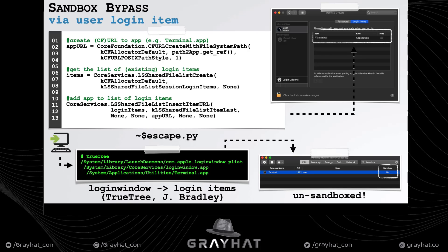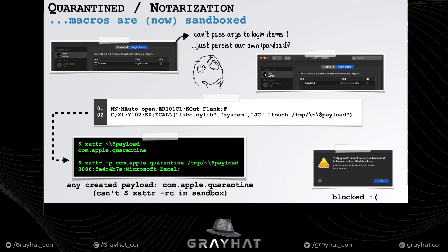We can confirm this by persisting Apple's Terminal.app via Python code running in the sandbox, and on next login, activity monitor shows terminal is running outside the context of the sandbox. However, we then quickly run into Catalina's more stringent quarantine and new notarization requirements. If we persist an arbitrary binary — say a backdoor — as a login item, when macOS launches it outside the sandbox, it will be blocked because it has a quarantine flag set and is not notarized by Apple.